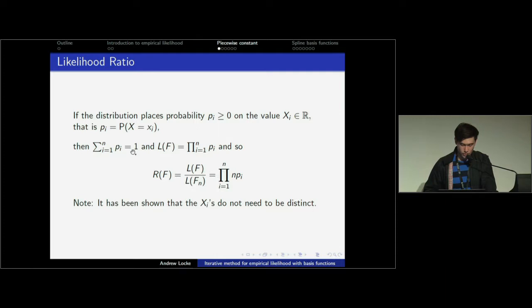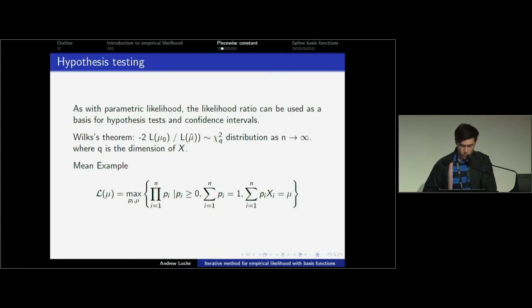We have this probability, pi, which we just call the probability that X takes a particular value. This is how we form the empirical likelihood. We take the product of these densities. Because they're probabilities, we require that the sum of them equals 1. We're interested in the likelihood ratio of this. We said before that the non-parametric likelihood was maximized by the empirical distribution function, which is just 1 over n. When we take the ratio here, we're just dividing by 1 over n and we get this ratio. It's been shown that we don't worry about ties in the data. The XIs do not need to be distinct, so the method still works.